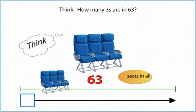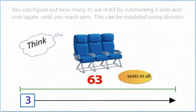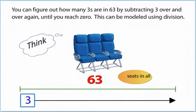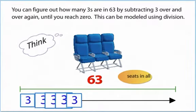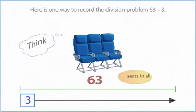Think, how many threes are in 63? Why is this a division situation? You can figure out how many threes are in 63 by subtracting three over and over again until you reach zero. This can be modeled using division.